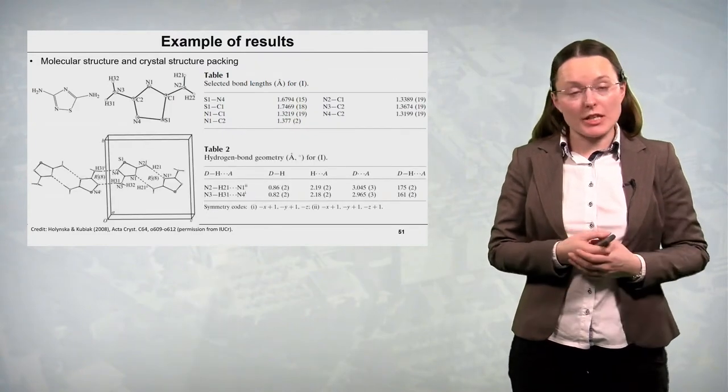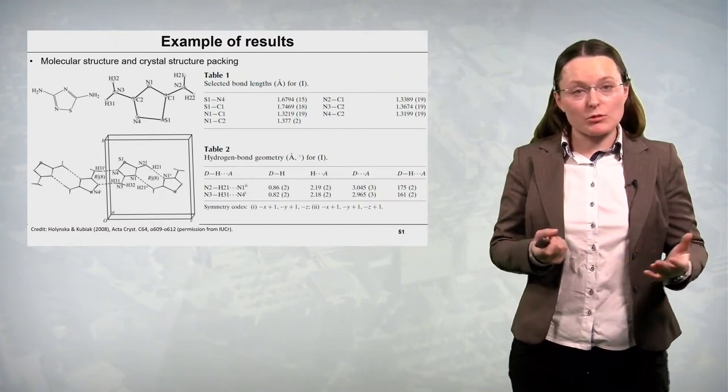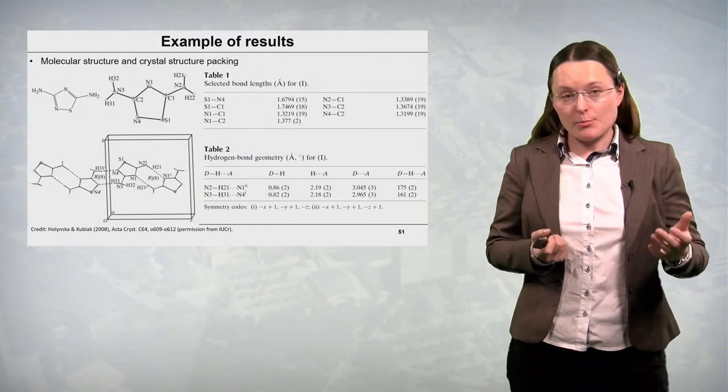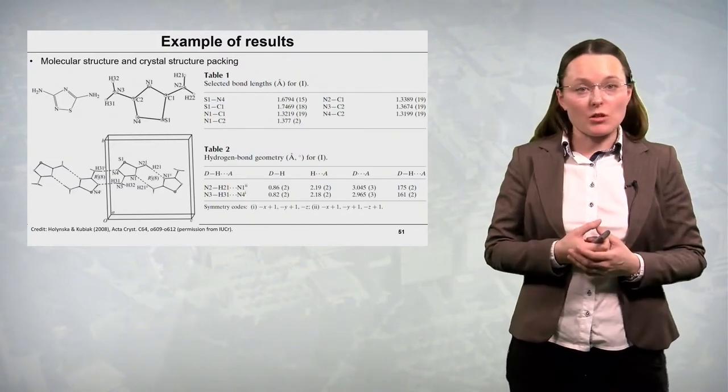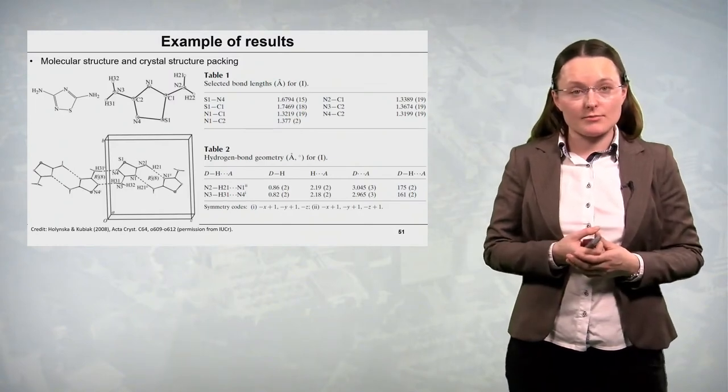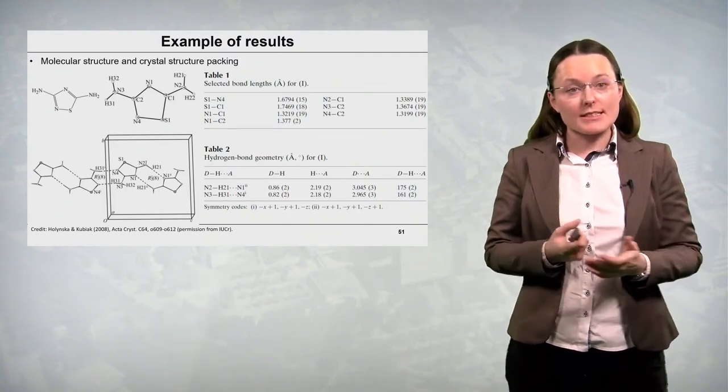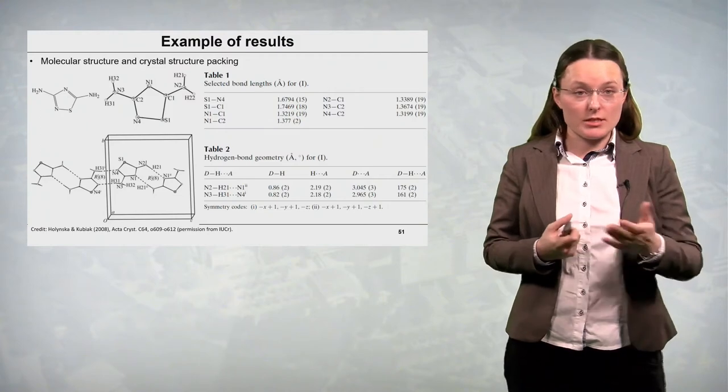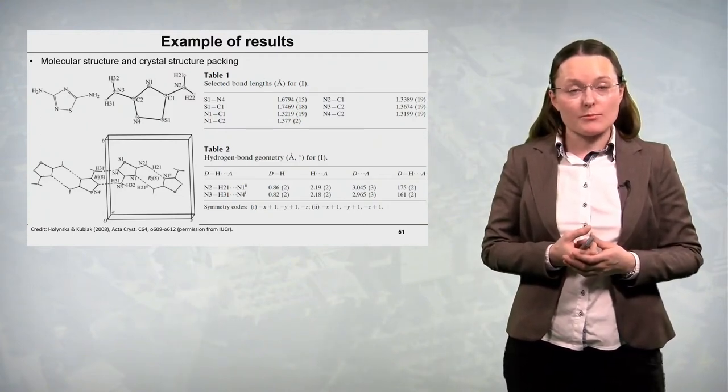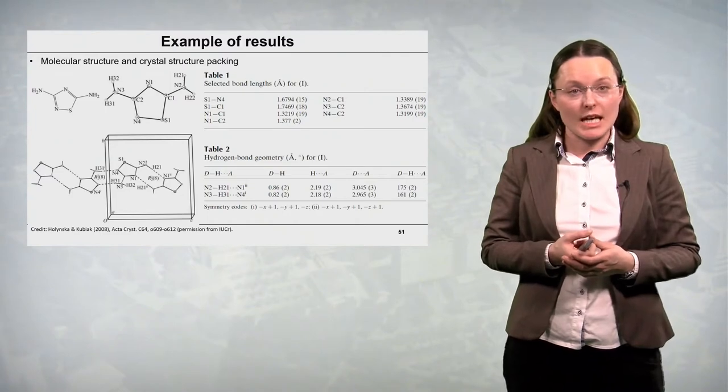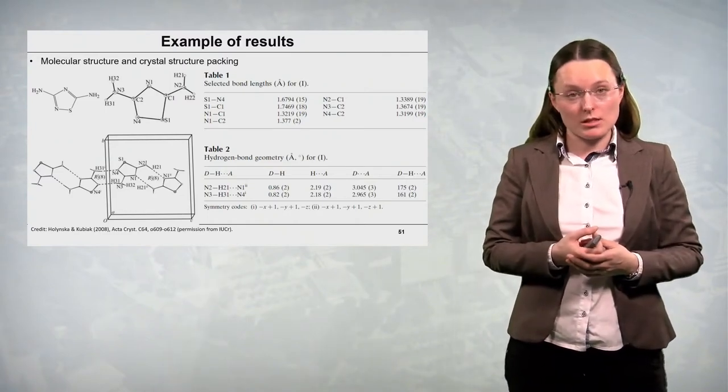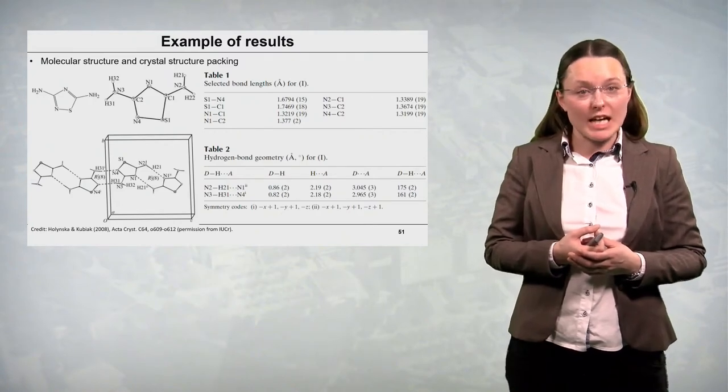Then we have some information about how the molecules are packed in the crystal structure. So there is a plot with several molecules and their respective orientation of the unit cell. And on the unit cell we have also the crystallographic origin and the cell constants ABC marked. The molecules interact via hydrogen bonds which are denoted with dashed lines.